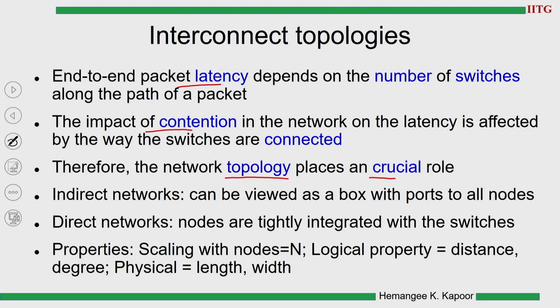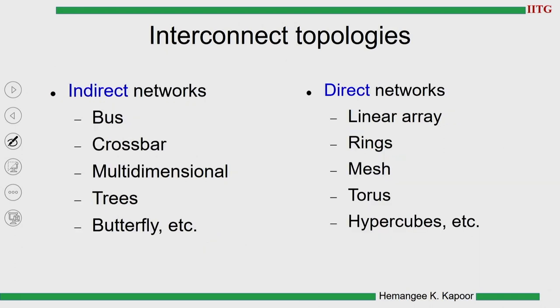These topologies come in two flavours: direct and indirect. Indirect networks can be viewed as a box with ports — every node is not connected directly to another node, it goes via a switch or another box. Direct networks are where the nodes are tightly integrated with each other or with the switches. When there is tight integration it is called direct; when you go via some box or switch it is called indirect. Many parameters have to be considered when deriving what type of topology fits best for a given design or architecture.